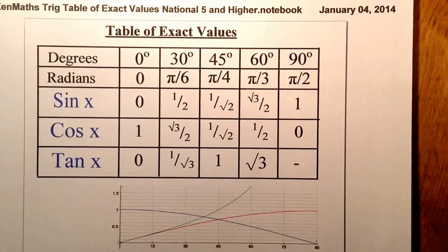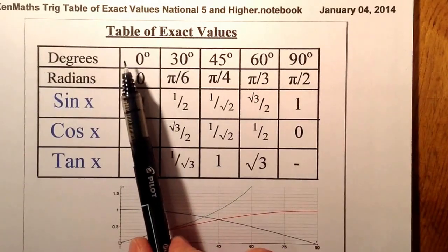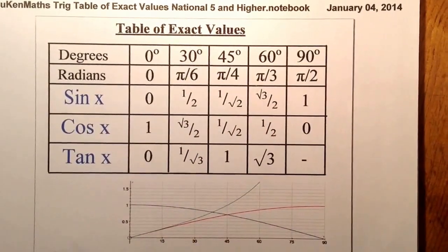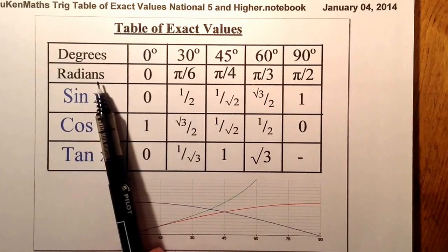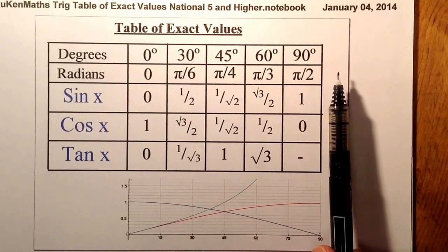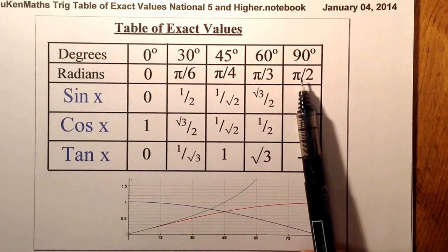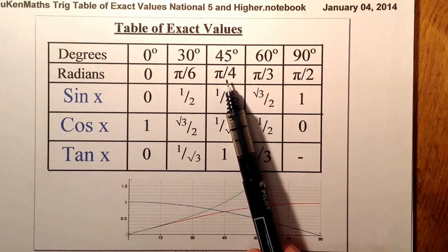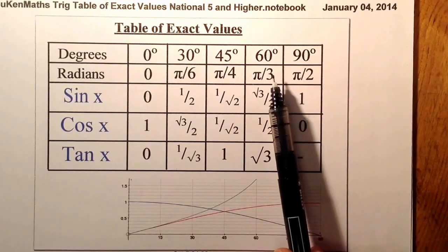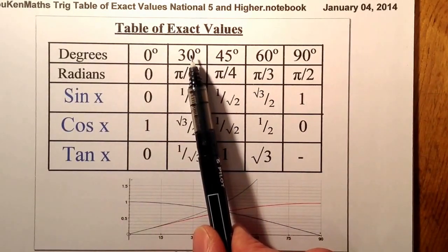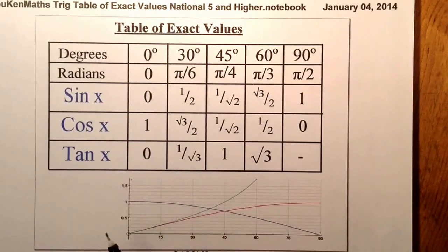So the first one — all we're looking at here are the values within the table based on the degrees at the top. What you need to remember is 0, 30, 45, 60, and 90 degrees. The radians are there for higher pupils. Remember that pi radians equals 180 degrees, so half of that gives pi upon 2, and half of that again gives 45 degrees, which is pi upon 4. 180 divided by 3 gives 60, so that's pi upon 3, and 30 degrees is a sixth of 180, so that'll be pi upon 6.